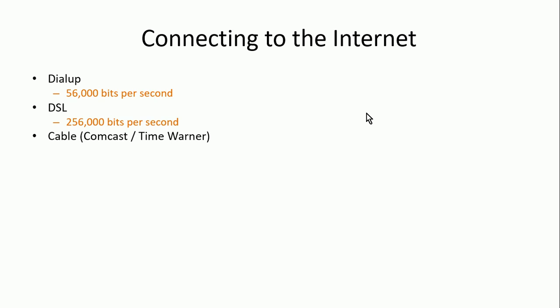Another example is cable. A good portion of you probably have cable at home for television and may use it for internet as well. With cable right now, you can expect around 50 million bits per second. Compare that to dial-up at 56,000 bits per second versus cable at 50 million bits per second — that's broadband technology, much faster.